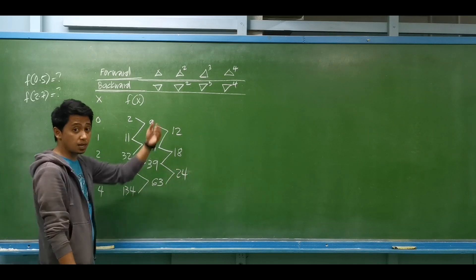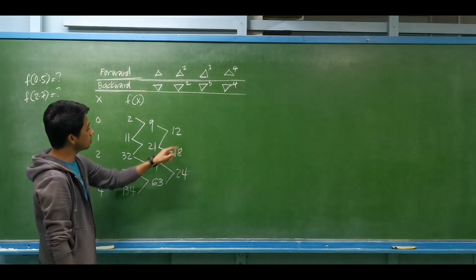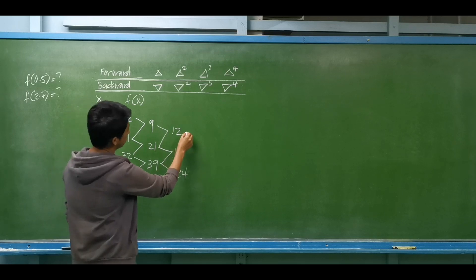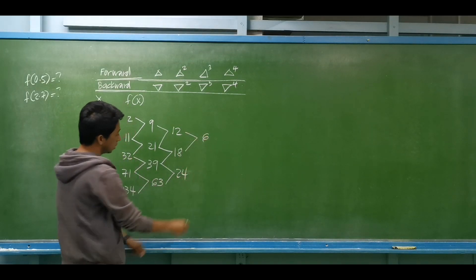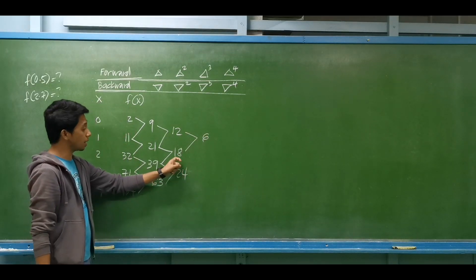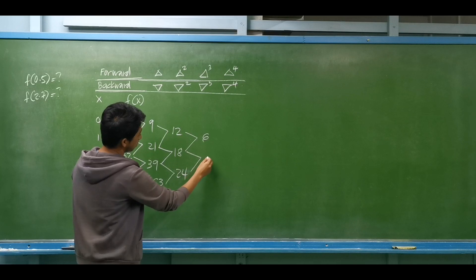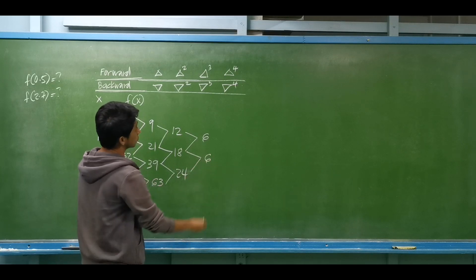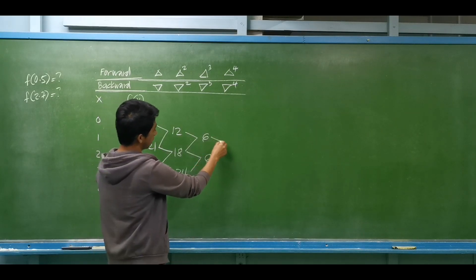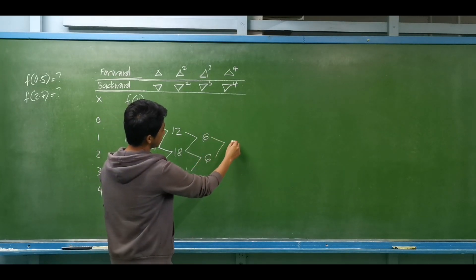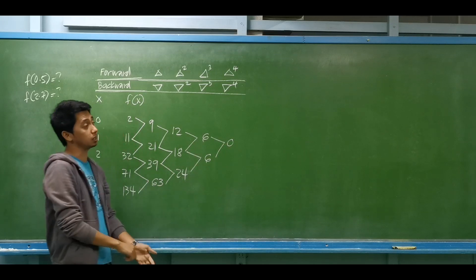For the next column of third differences: 18 minus 12 is 6, and 24 minus 18 is also 6. For the last column, the fourth difference, 6 minus 6 is 0.